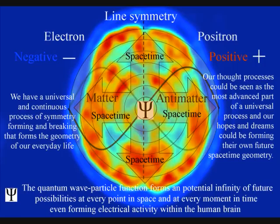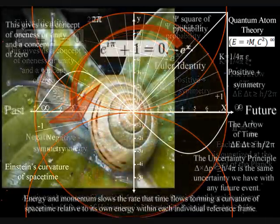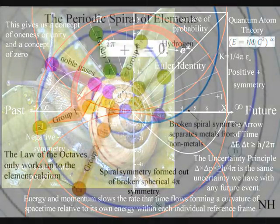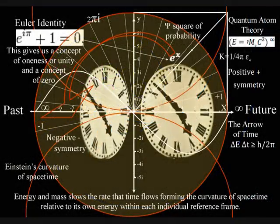This process is totally universal and interactive. From the largest object to the smallest creature, right down to the smallest element of the periodic table, everything will slow the rate that time flows, forming a curvature of space-time relative to its own energy or mass.